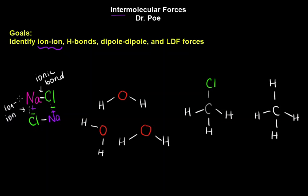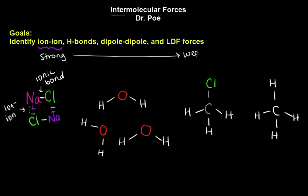So if it's got ionic bonds, it's ion-ion. These are listed in order of strength, from strongest here all the way down to the weakest.